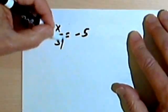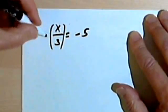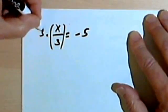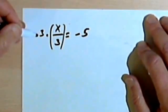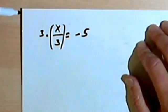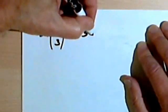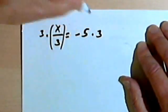So I'm going to multiply this fraction, x over 3, by 3. If I multiply one side of an equation by a number, I've got to multiply the other side by the same number. So that means I have to multiply the right side of the equation by 3.